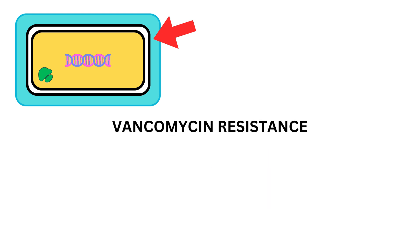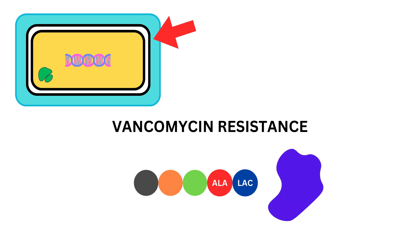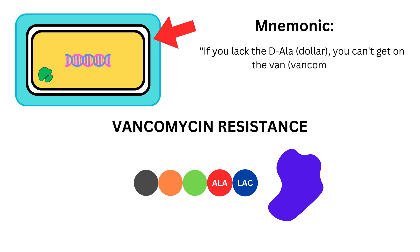Some bacteria will try to evade this attack by mutating themselves. So instead of making D-alanine-D-alanine, they will make D-alanine-D-lactic acid. Since vancomycin is used to binding to D-alanine-D-alanine, it will not recognize this new dipeptide and will not bind to it. You can easily remember this by the mnemonic: if you lack the dollar, you can't get on the van.